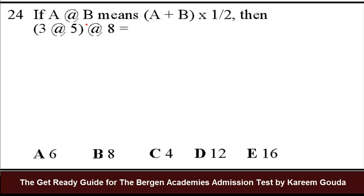Number 24. If A at B, that's just a symbol, it could be anything else, it could be a star, it could be whatever. If A at B means A plus B all times half, then 3 at 5 all at 8 equals what? First thing, I'll start with this. So I take 3 at sign 5 equals.